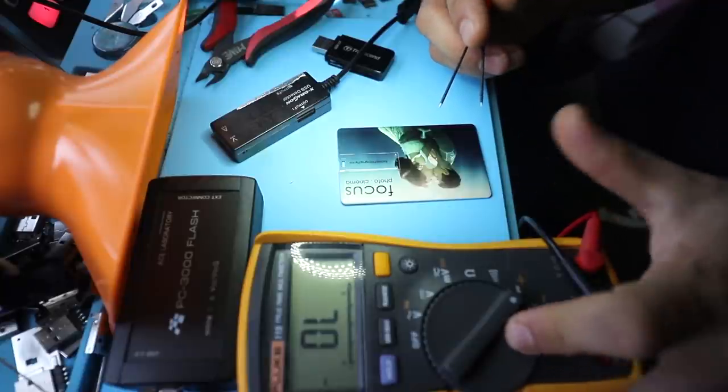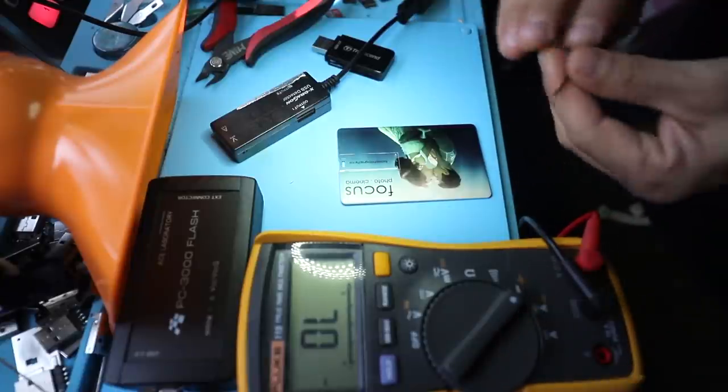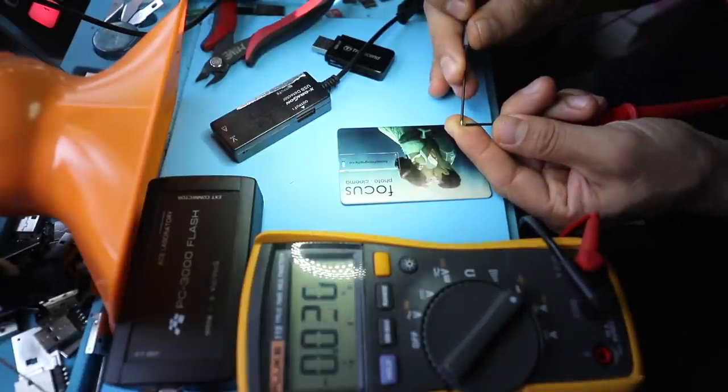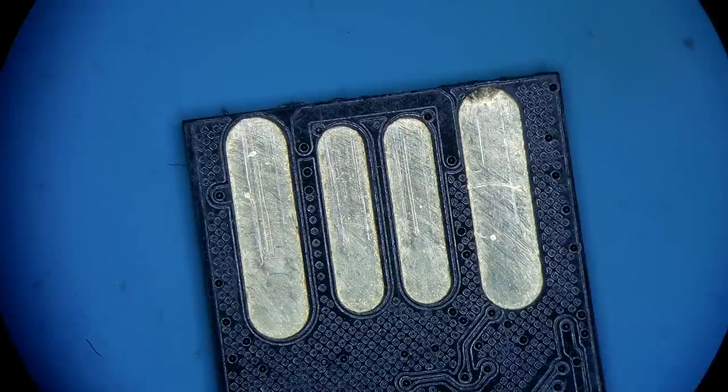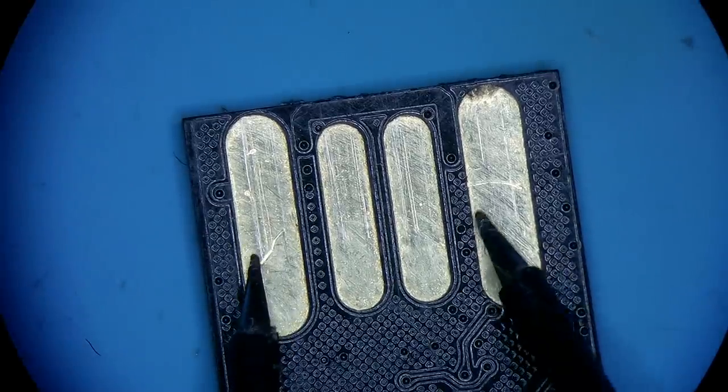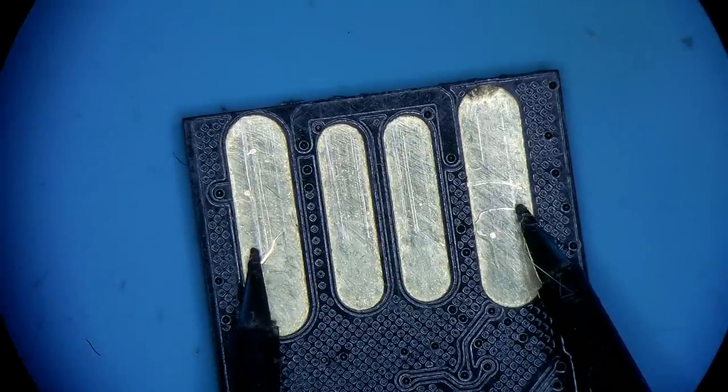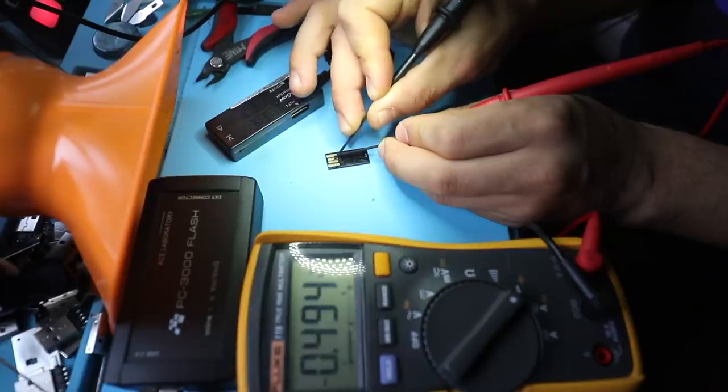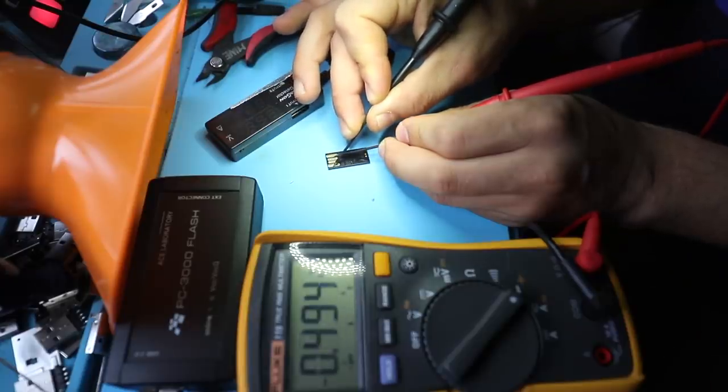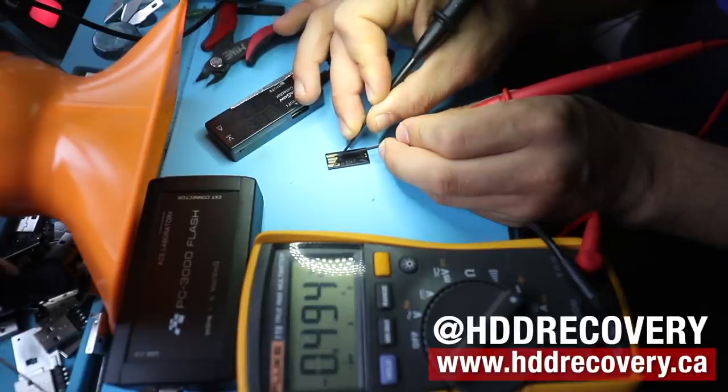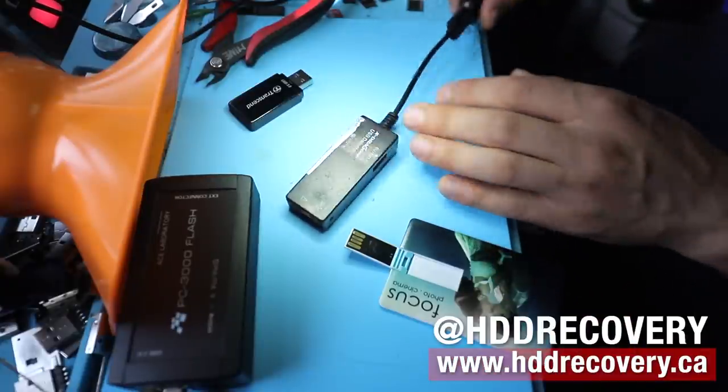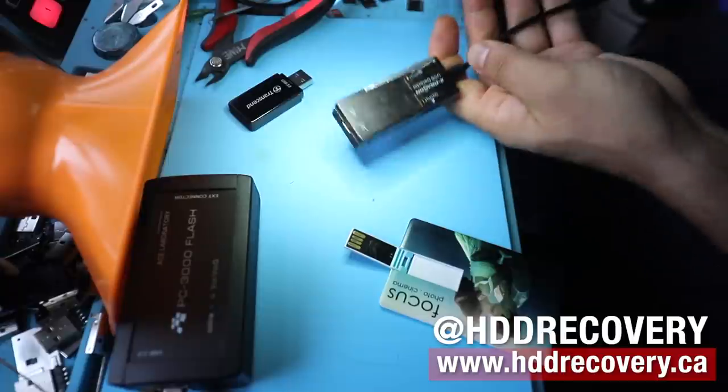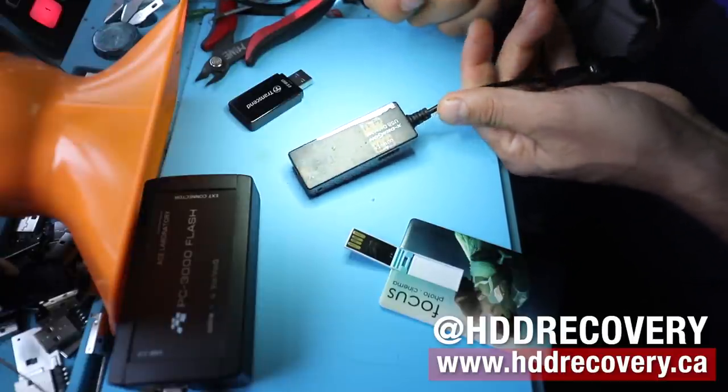To test this we're going to set the multimeter to diode test mode. One probe goes on the ground, another probe goes on the power. We see our connector, these two outside pins. If we hear a beep, that means they're shorted. If there is no beep, no constant beep, there is no short. So we have no short, we're good to proceed.